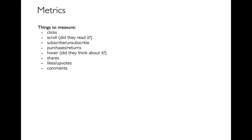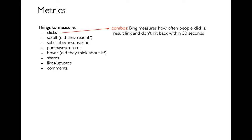A lot of companies will come up with different combinations of these metrics. For example, Bing, instead of just simply measuring how often people click on things, wants to know how often they're clicking on something that's actually helpful as a search result. So they'll say: did you click on the link and then not hit the back button within 30 seconds? They're combining those two events — a click and then not a back.